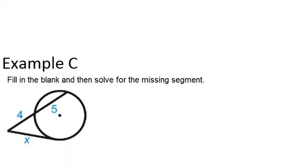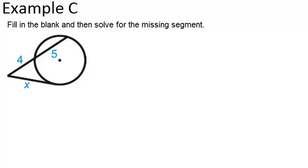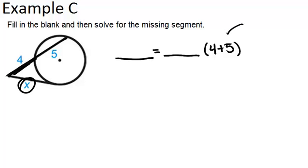Let's finish off by looking at Example C. It says fill in the blank and then solve for the missing segment. So we have an equation here that's partly written for us, so we just want to fill in the blanks. In this type of situation, we always have the tangent line squared equals the outside part times the whole thing. So what we have here is the whole thing part of that situation.